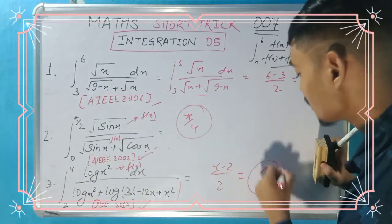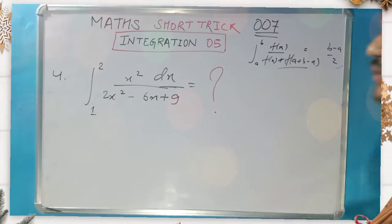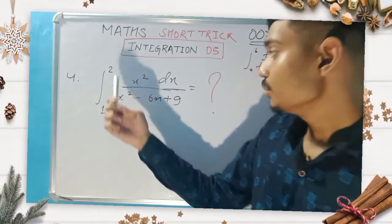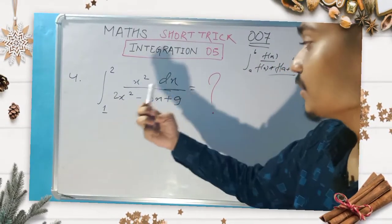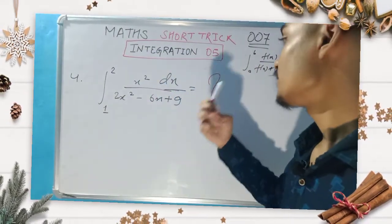This is our required answer. Now the fourth question is integral 1 to 2 of x square dx divided by 2x square minus 6x plus 9. This equals how much?